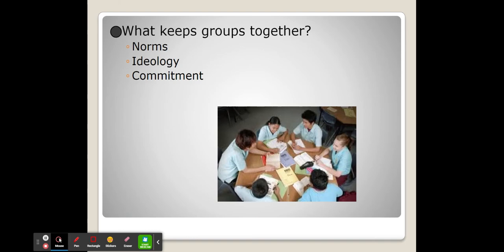When you have more than one person together, especially more than two, you definitely have a group. But sometimes groups are just collections of people. So what keeps groups together? Norms are rules, either written or unwritten, that all members of a group are expected to follow. Ideology is the set of shared beliefs or goals that everyone in the group maintains. And commitment is the idea that each person supports one another and the group as a whole.